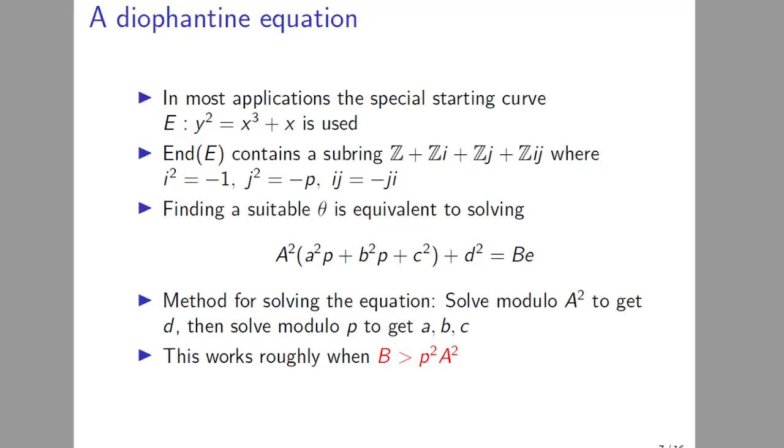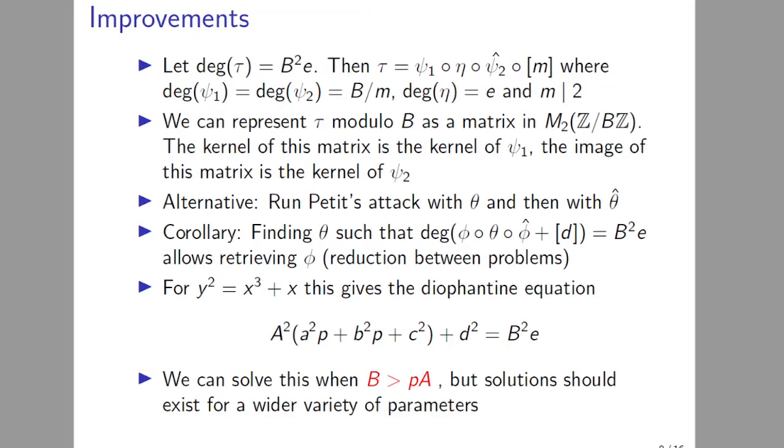Our main results concern improving these methods in various ways. Let me start with our first improvement. The first improvement is that it's actually enough for the degree of τ to be equal to B^2·e. And why is that? Because then τ can actually be decomposed as ψ_1∘η∘ψ_2∘[m] + multiplication by m, where the degree of ψ_1 and ψ_2 is b/m and the degree of η is e. And m is actually either 1 or 2.